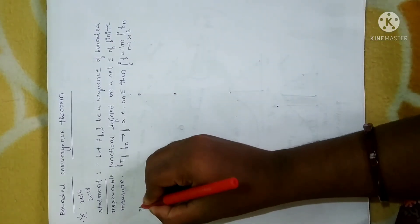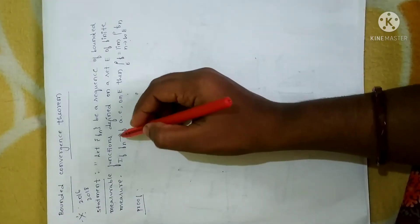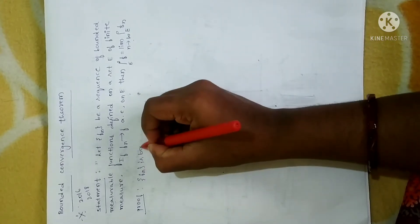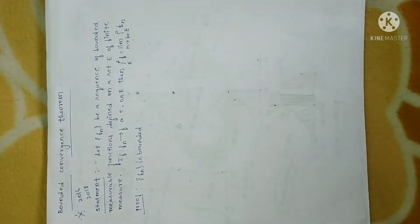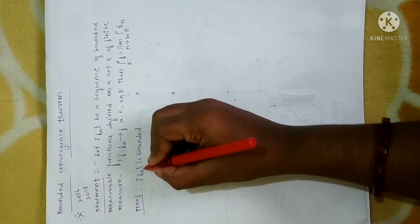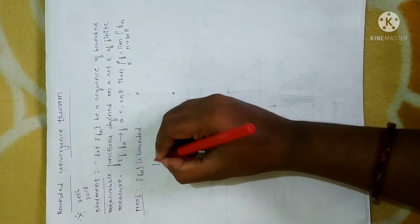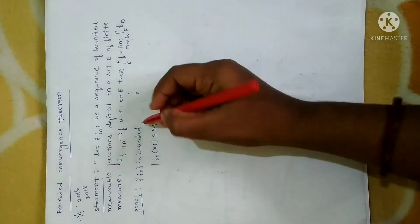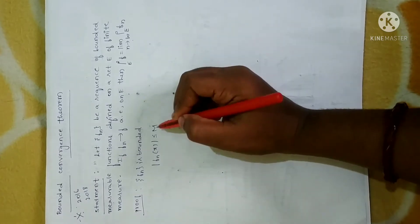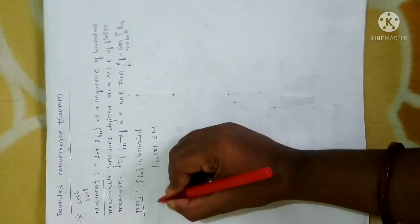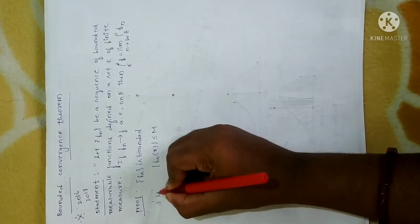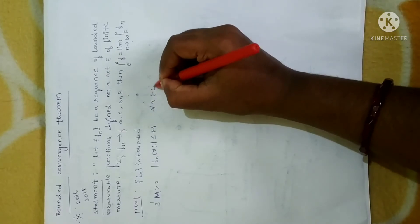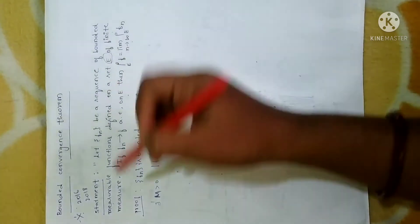Now coming to the proof. Given that Fn is a bounded sequence — bounded in the sense the value of the sequence should lie between certain values. Let me take that value as M. That is, |Fn(x)| ≤ M, meaning there exists M greater than 0 such that this condition is satisfied for all x belonging to E, since the sequence is defined on a finite set of measure.